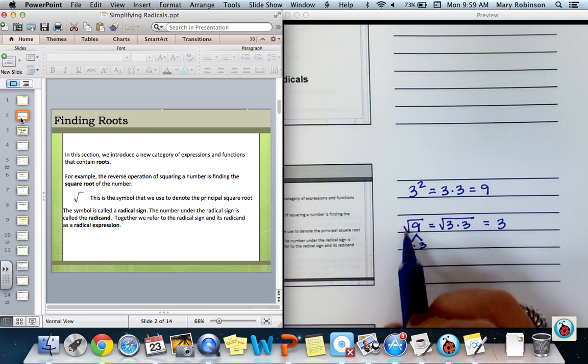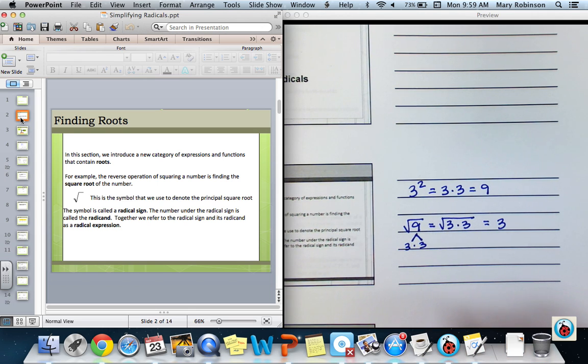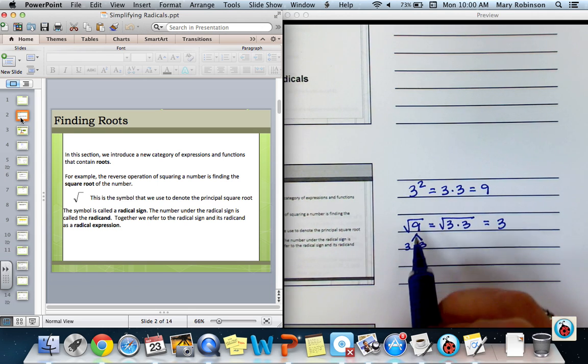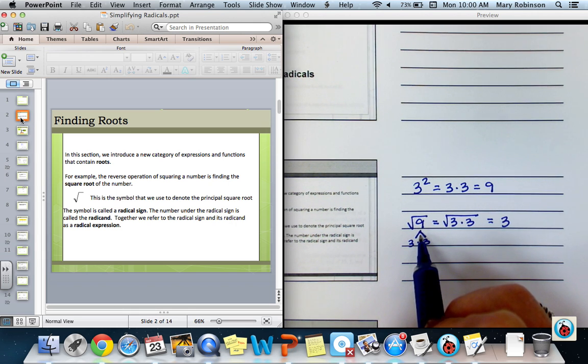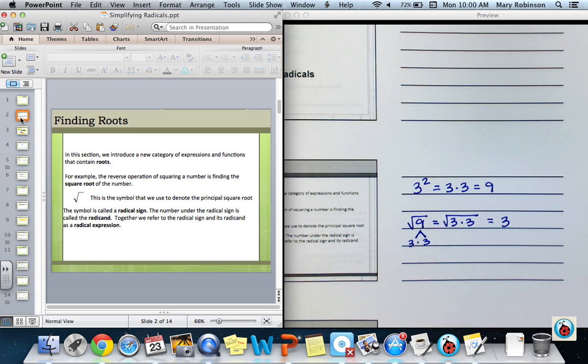The symbol that we use here to denote the principal square root is known as a radical sign. The number under the radical, in this case the 9, would be known as the radicand. Together, we refer to this radical sign and the radicand as a radical expression.